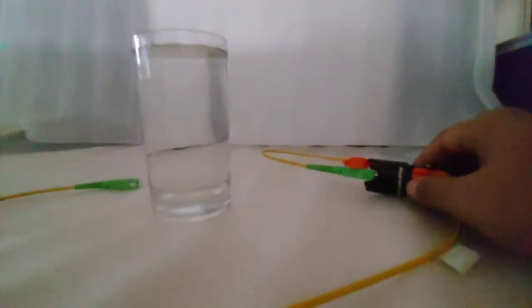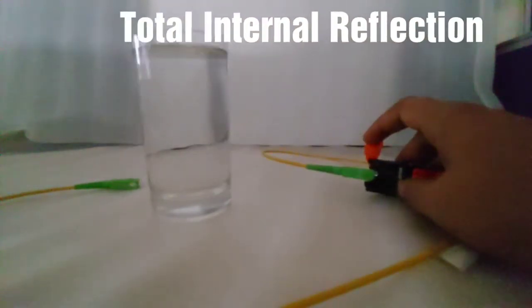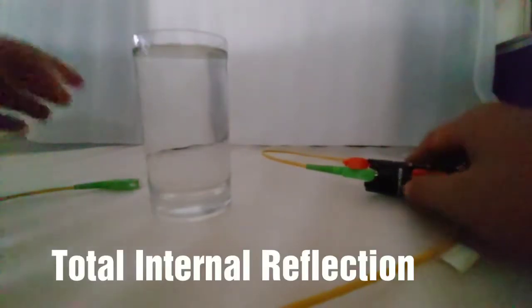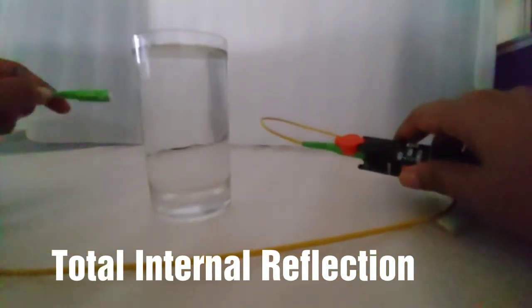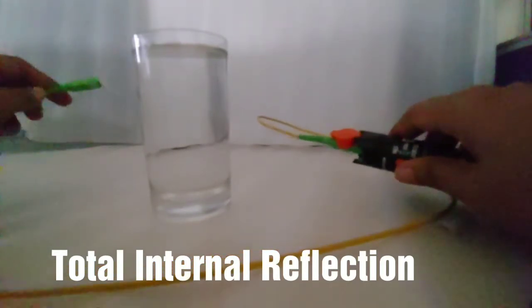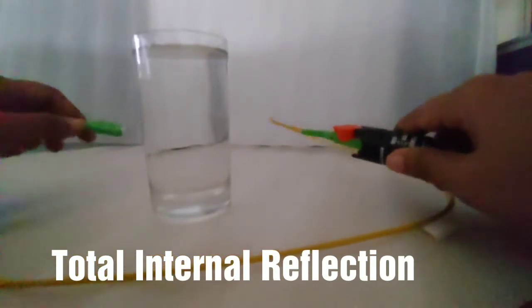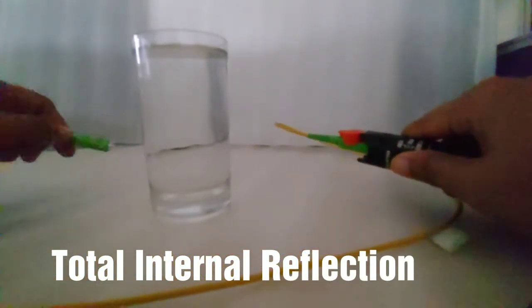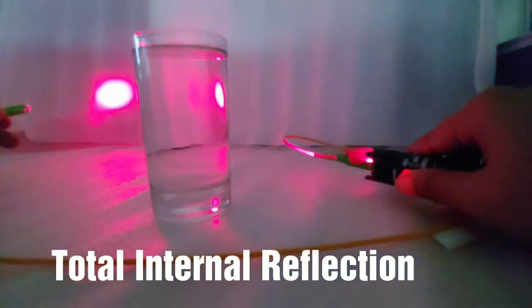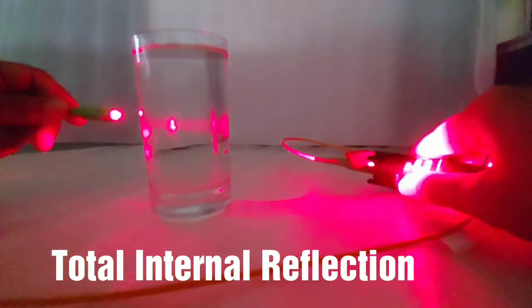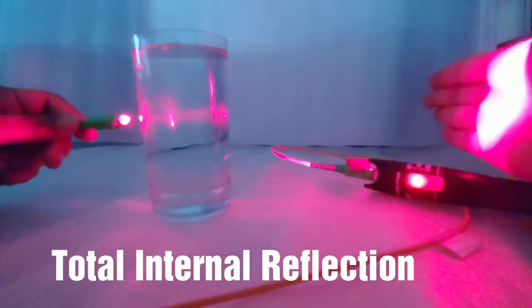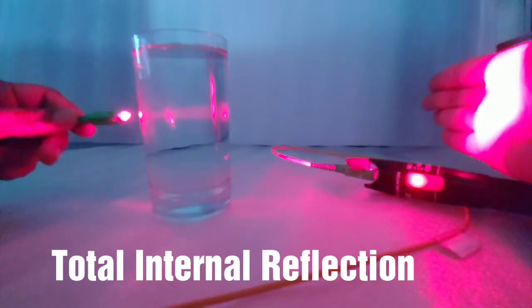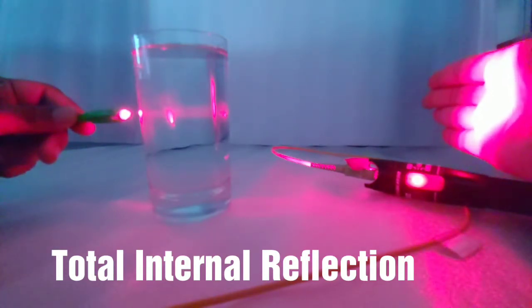My next experiment is to show total internal reflection. This must be an experiment you would have done in your school days. I am going to do it with my VFL. I have connected the VFL and patch cord. The patch cord is connected because the VFL light will not be focused if I use it without a patch cord. I am switching on the VFL - you can see the light output. I am focusing it through - you can see there is a straight line passing through the middle of the glass.